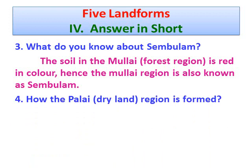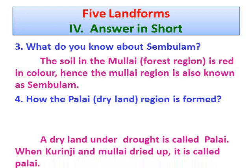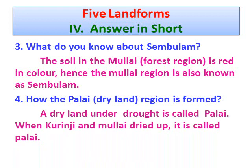Question number four: How is the Palai or dry land region formed? Answer: A dry land under drought is called Palai. When Kurinji and Mullai dried up, it is called Palai.